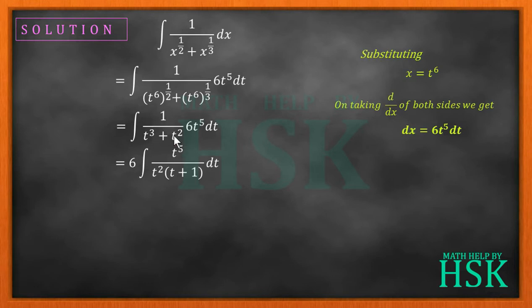I've taken t^2 as common from both terms, giving me t^2 times (t + 1). This t^2 can be simplified with t^5, giving t^3. So I get 6 times the integral of t^3 over (t + 1) dt.